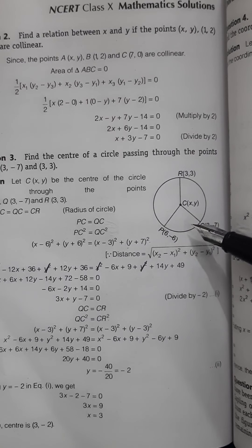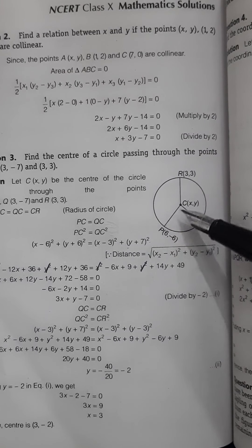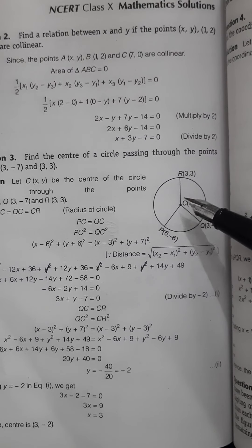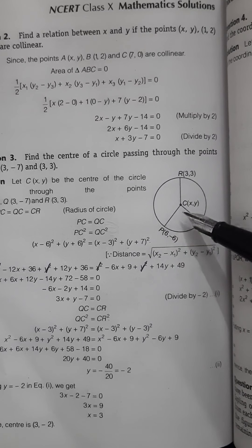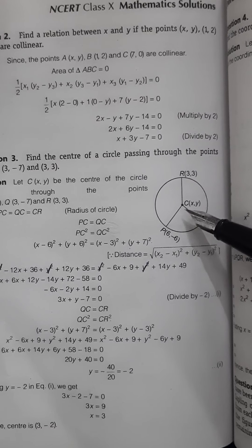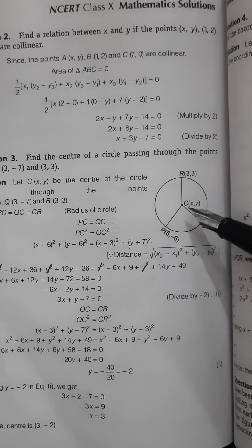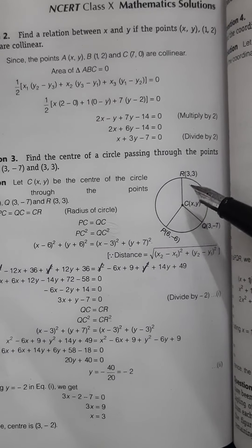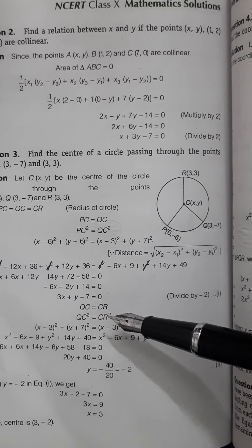What's important in this question is for us to understand that if this is the center, these are all radii, and we know that all these distances are going to be equal. So CP, CQ, and CR are equal. What we need to do is equate these. First, let's equate CQ and CR.